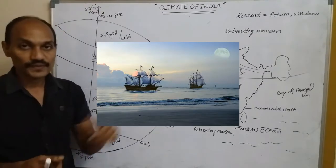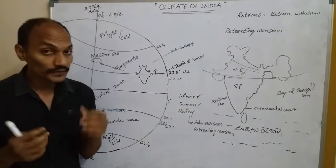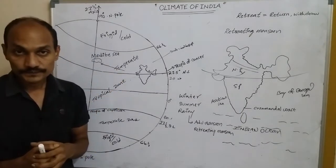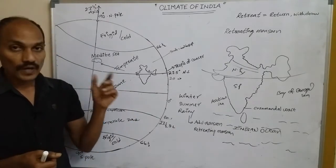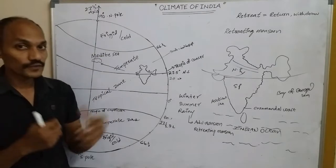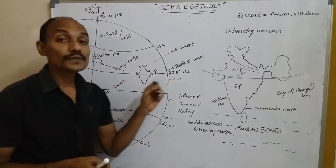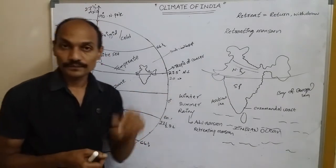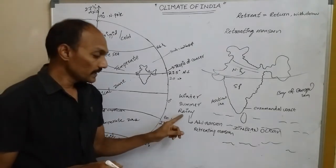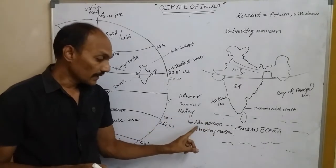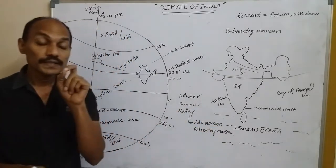In olden days there were no modern facilities to travel, so they used boats or ships. Their travel was based on the reversal wind system, so the Arabian sailors named it 'mausam' meaning season. The rainy season is divided into two — advanced monsoon, known as the southwest monsoon, and retreating monsoon.